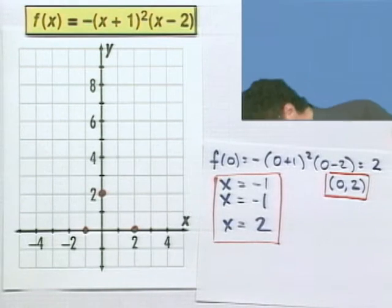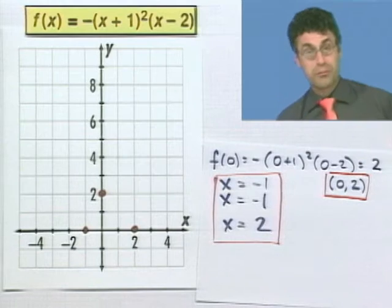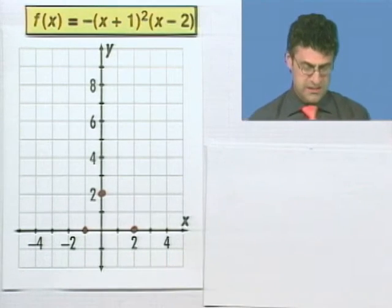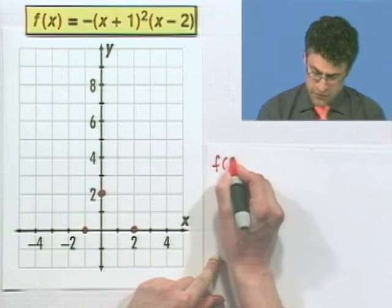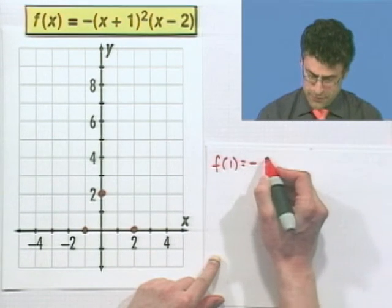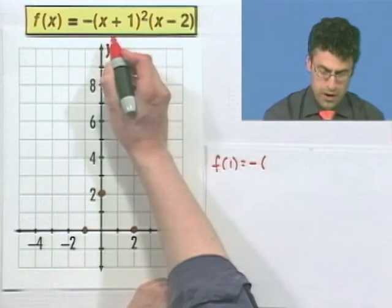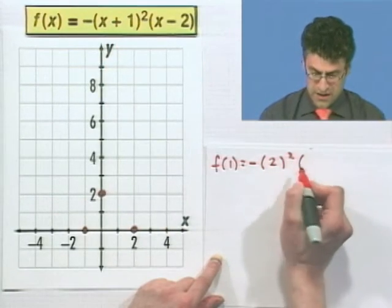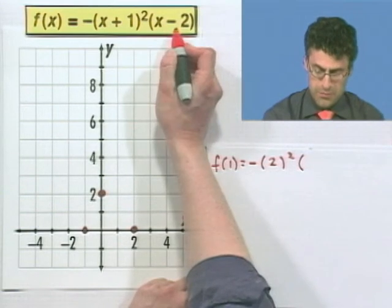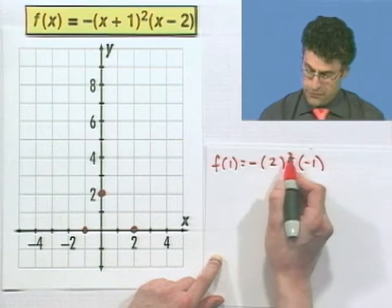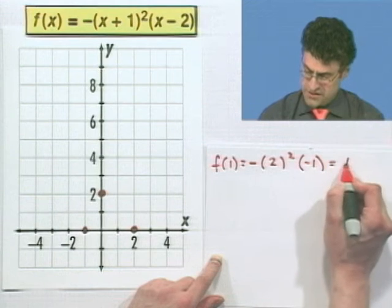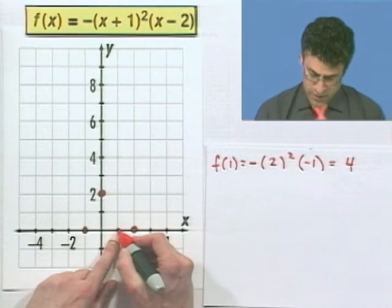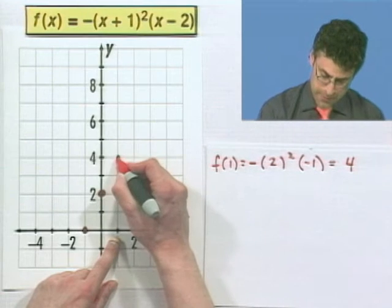It's like a little puzzle. If you're not sure, the best thing is to plot one or two more points. Let's let x equal 1 and see what happens. f(1) equals negative times (1 plus 1) squared times (1 minus 2) — that's negative times 4 times negative 1, which is positive 4. So when x equals 1, we're at 4 — way up here.